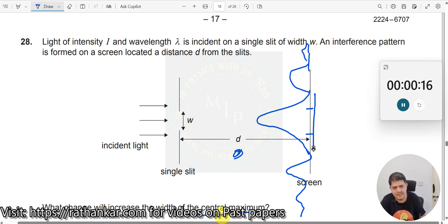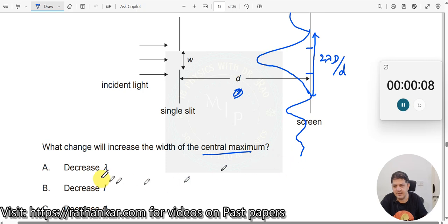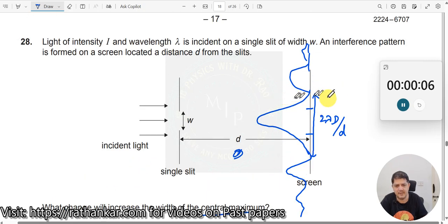Now what is this width here? This width here will generally be 2 times lambda into capital D divided by small d. Now what is being asked? What change will increase the width of the central maxima? This is the width of the central maxima. Now what should you increase? What should you increase over here?